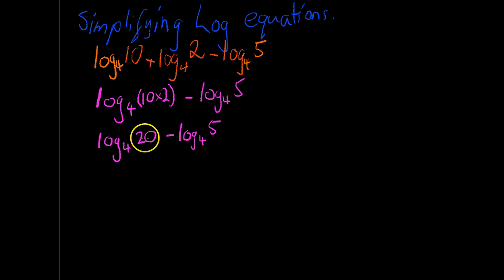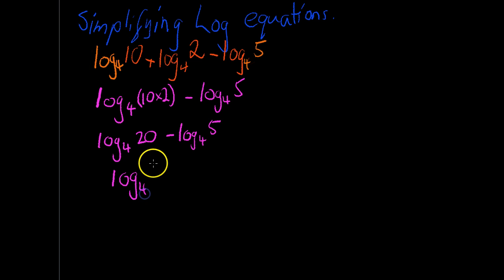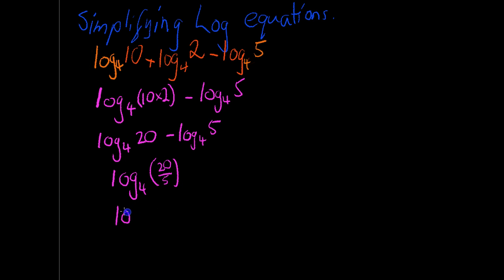So we should be able to think of our second log law. If two logs with the same bases are subtracted from each other, that's the same as one log with those two divided by each other. Log base 4, 20 divided by 5. That gives us log base 4, 4.